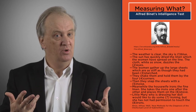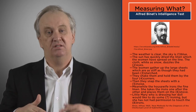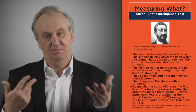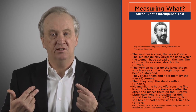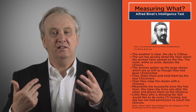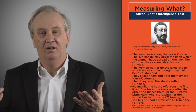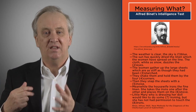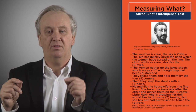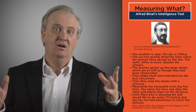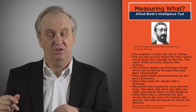The very first things that were measured, and the very first tests in their modern form, were intelligence tests. A man in Paris whose name is Alfred Binet created a set of tests that asked questions like: 'The weather is clear, the sky is...' — and then the person put in the answer, 'well, it's blue.' Or: 'The sun has quickly dried the linen which the women have spread on the line. The cloth, white as snow, dazzles the eyes.' These are some actual questions from the very first IQ tests.